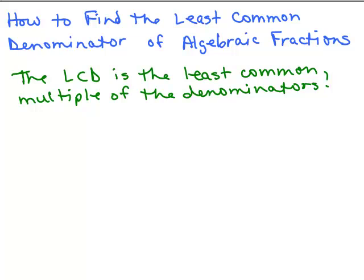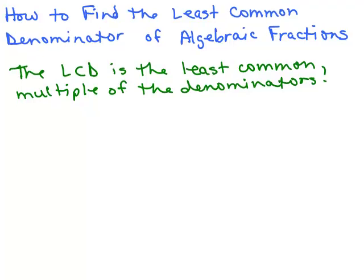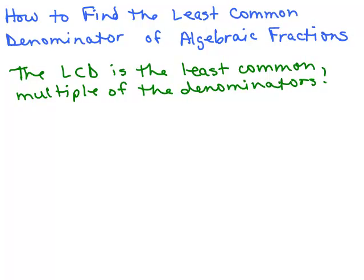In this video, I'm going to go over how to find the least common denominator of algebraic fractions. These will be a little bit more advanced where we've got three different fractions, so we're stepping up the pace. Remember we use LCD as an abbreviation for least common denominator, and the LCD is simply the least common multiple of the denominators. The reason we want to find the LCD is because it's in preparation for adding fractions — when we have different denominators, we need to figure out how to get a common denominator.